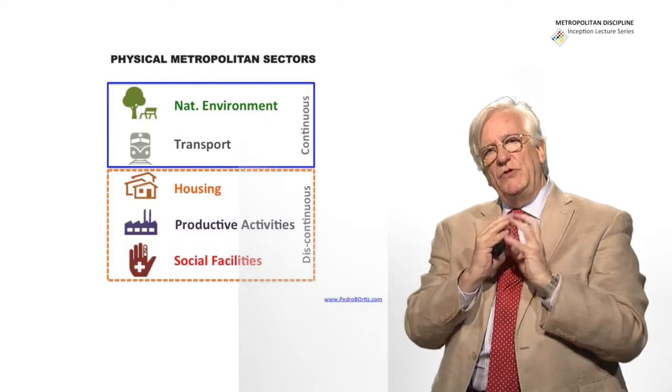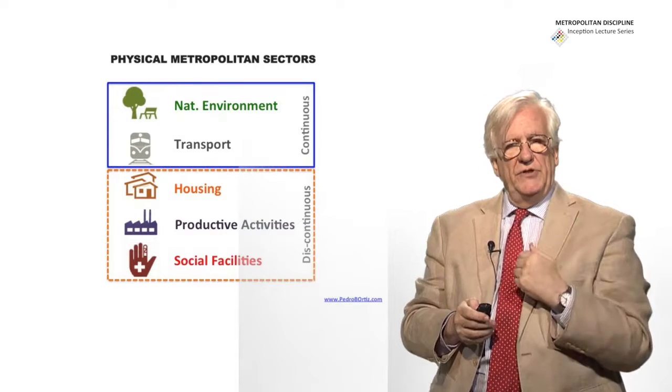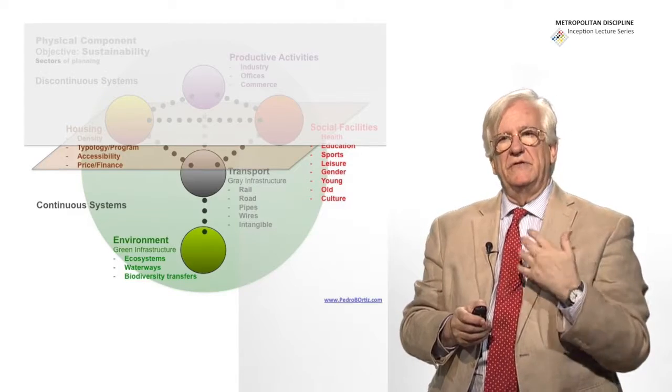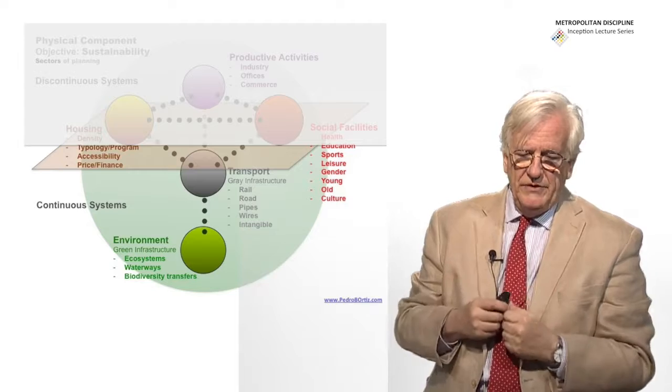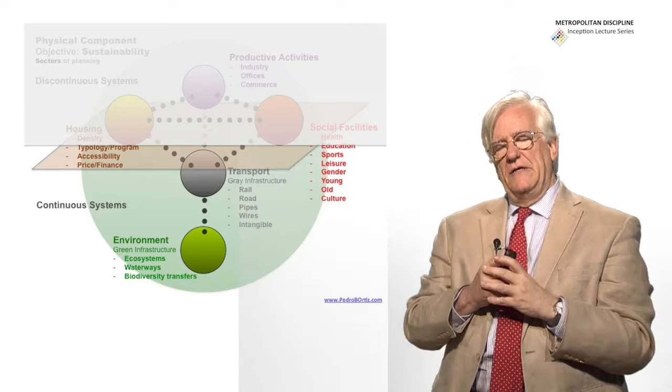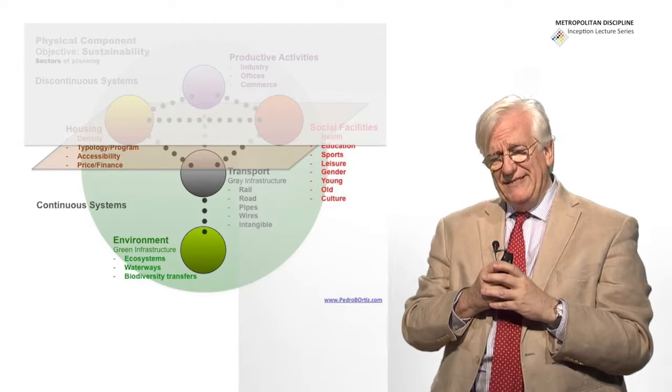So we have two continuous systems which are environment and transport and we have three discontinuous systems which are housing, productive activities, industries, commerce, and offices, and social facilities.